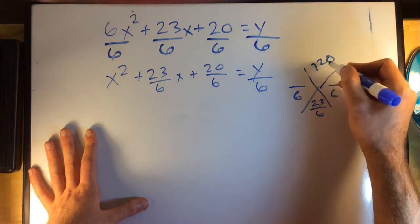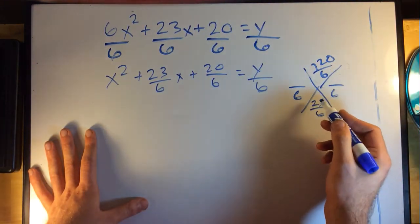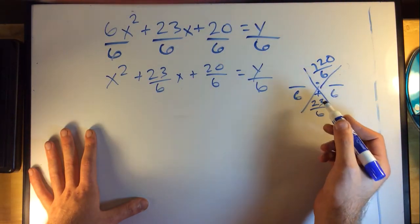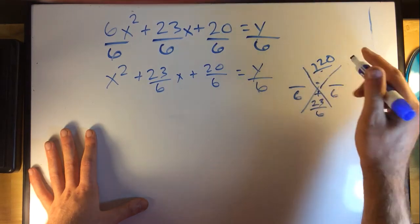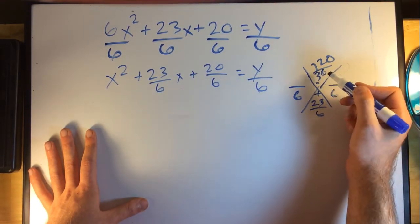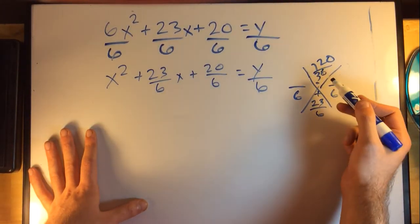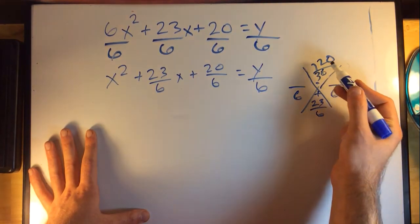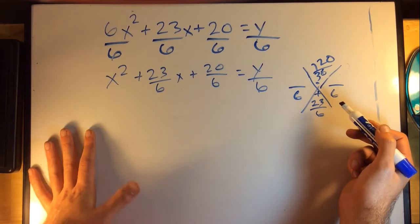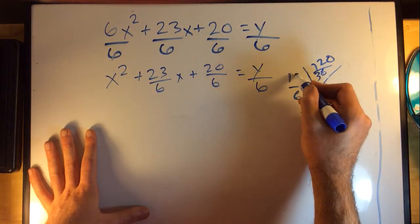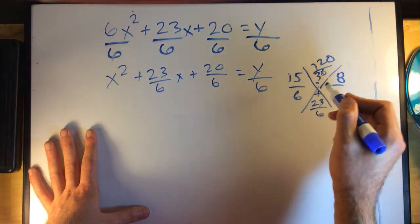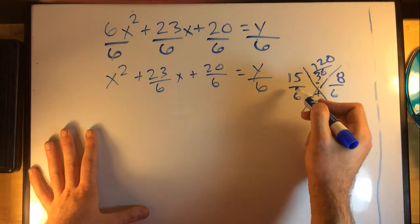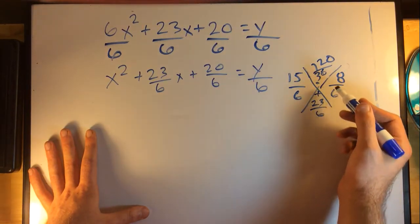I've got 120/36 up top, 23/6 on the bottom. What multiplies to equal 120 and adds up to give me 23? Well it's the same thing as we had before, it's going to be 15 and 8. 15/6 plus 8/6 gives me 23/6, 15/6 times 8/6 gives me 120/36.